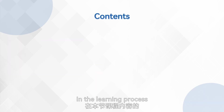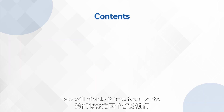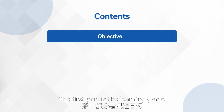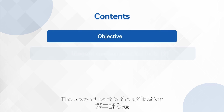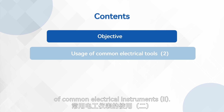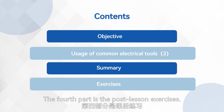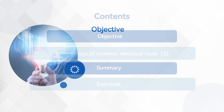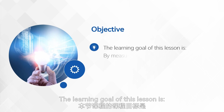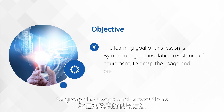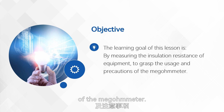In the learning process of this lesson's content, we will divide it into four parts. The first part is the learning goals. The second part is the utilization of common electrical instruments. The third part is the summary of the lesson. The fourth part is the post-lesson exercises. The learning goal of this lesson is, by measuring the insulation resistance of equipment, to grasp the usage and precautions of the megometer.